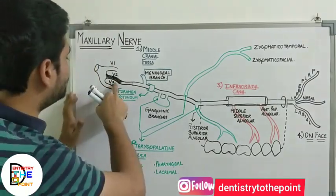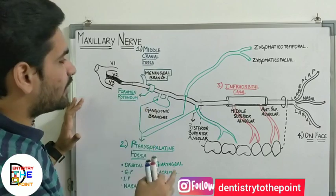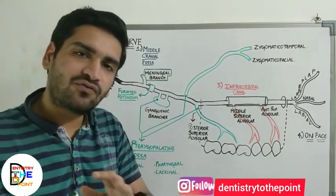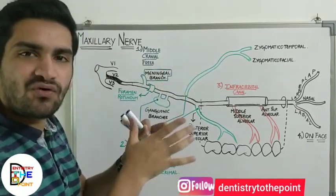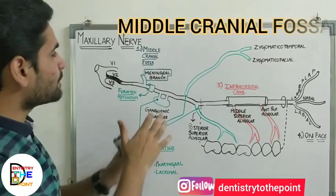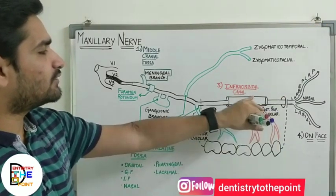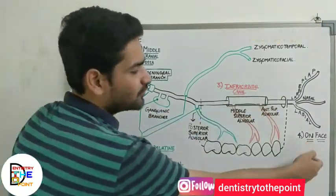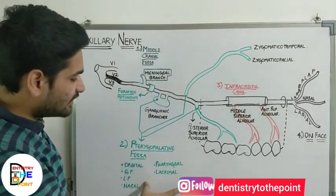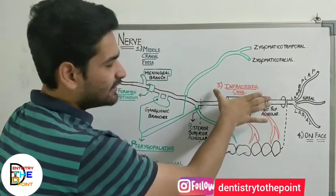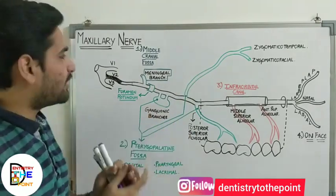The second division of the fifth cranial nerve, the maxillary nerve, is going to give its branches in four different anatomical locations. The first branch is given in the middle cranial fossa, the second in the pterygopalatine fossa, the third in the infraorbital canal, and the fourth on the face. You can differentiate these by color: middle cranial fossa, pterygopalatine fossa, infraorbital canal, and face.